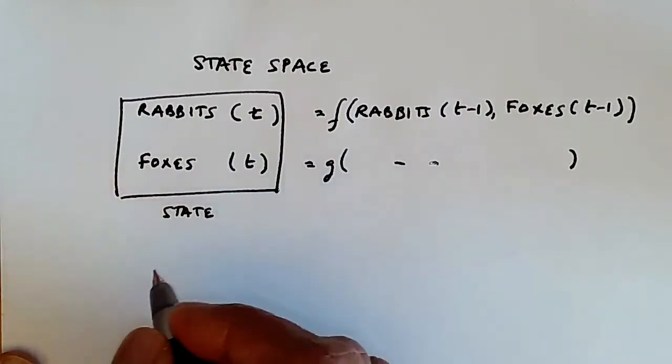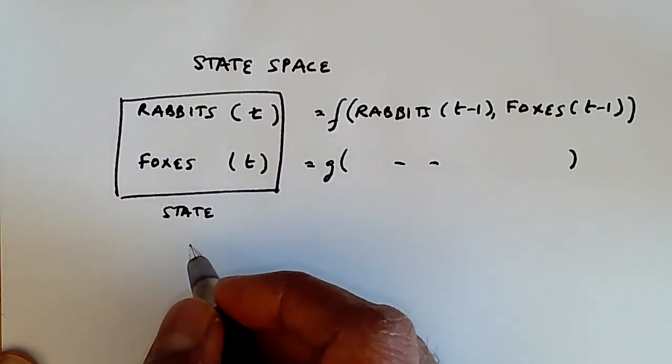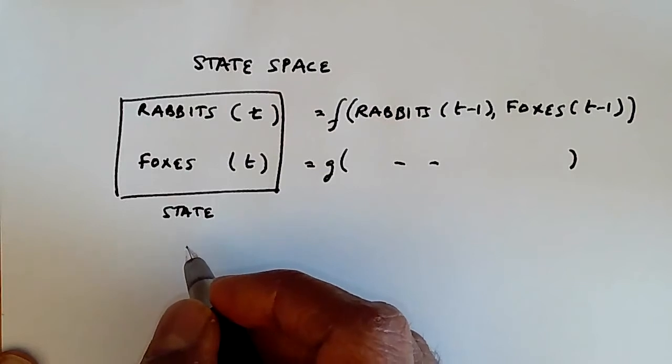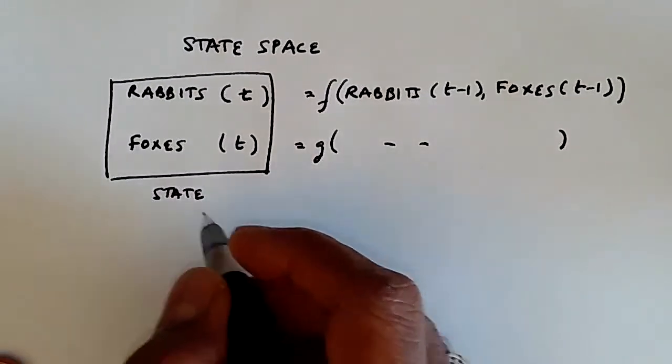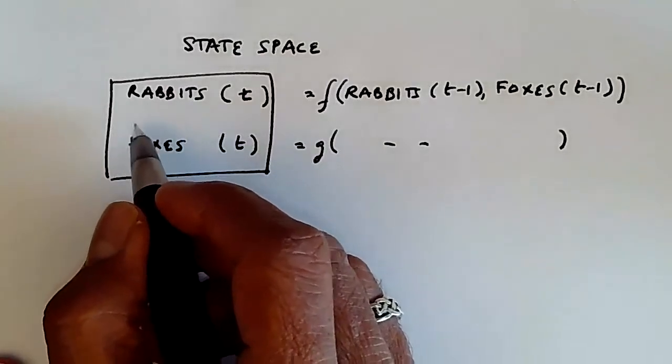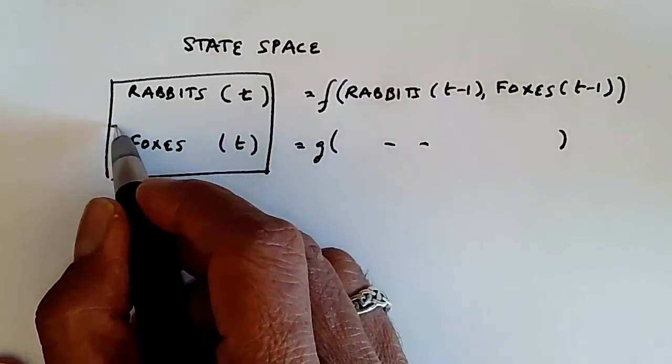It just has two variables in it, the number of foxes and the rabbits. Once we know these two values, then we know exactly how the simulation proceeds. Moreover, if we want to know the average number of rabbits over time, that would be a statistic computed on rabbits t, on the array of the rabbit values.